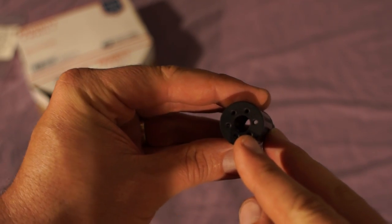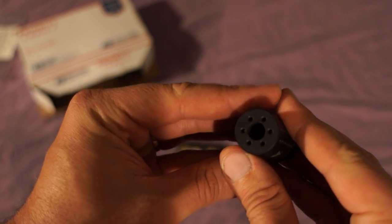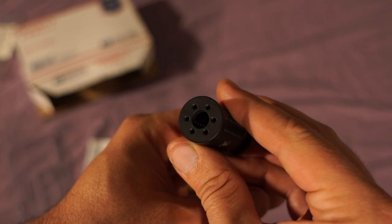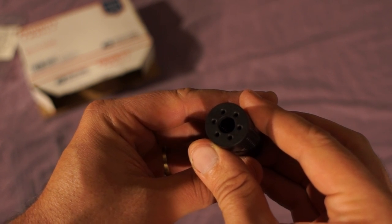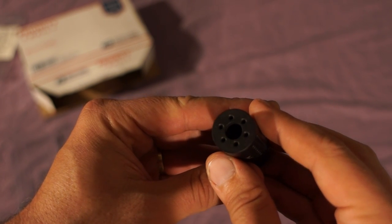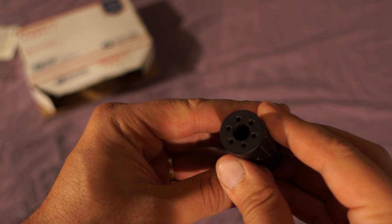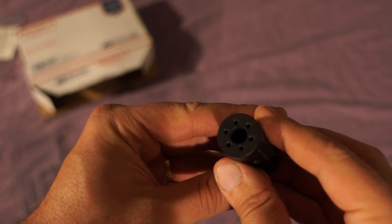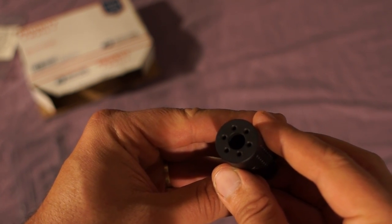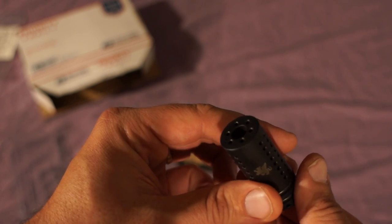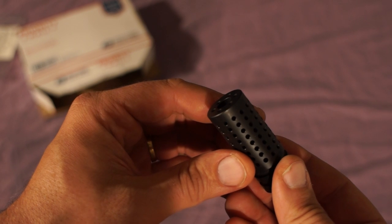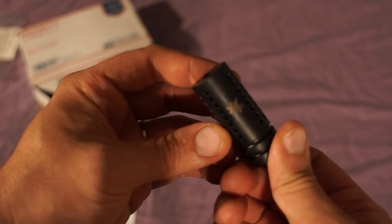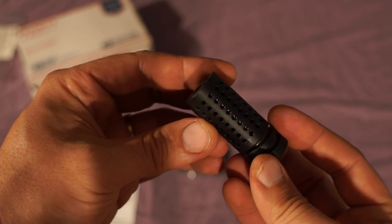Now this is a 7.62 compensator but it is going to be used on a 6.8 build. It can be used for 6.8, it can be used for 6.5 Grendel, 300 Blackout, 7.62 by 39, 7.62 by 51 aka 308, and I guess possibly 300 Win Mag if you had a device or a barrel to thread this device onto.